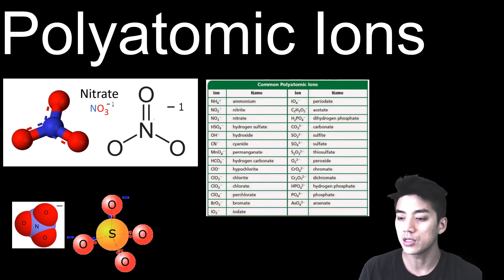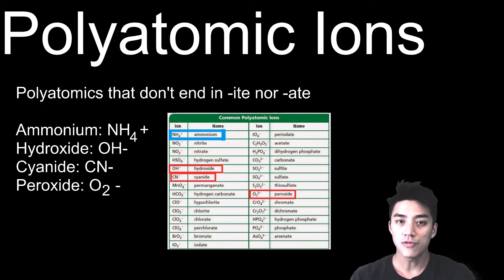I want to point out 4 exceptions to the rule where they are polyatomics but they don't end in -ite nor -ate. The first one is special - this is the only one that has a positive charge on the chart, and that is ammonium. Ammonium is nitrogen bonded to 4 hydrogens and it's got a plus 1 charge.